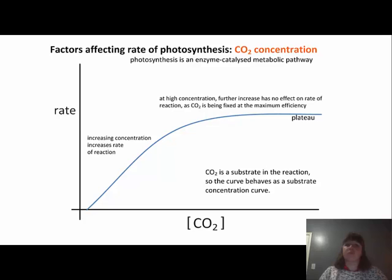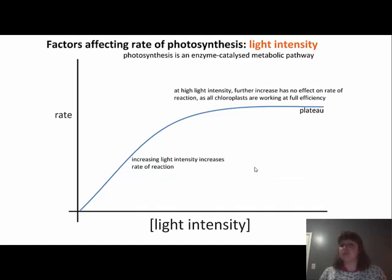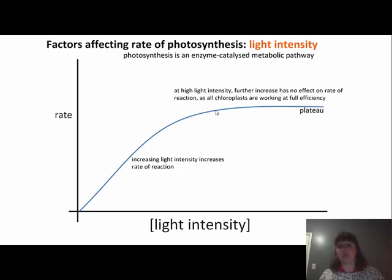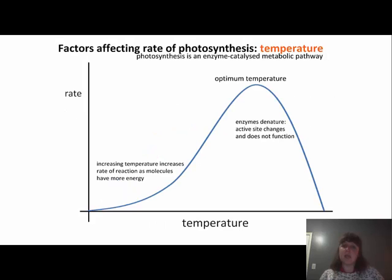The next factor is light intensity. As you increase light intensity, the rate of reaction increases in a near-steady increase, but once you reach a high light intensity a further increase has no effect because all the chloroplasts are working as hard as they can. When we say intensity, we mean brightness of the light — not heat. In the leaf disc lab, we include a water bowl as a heat sink to absorb heat so we're not denaturing our enzymes.